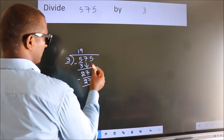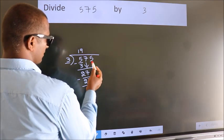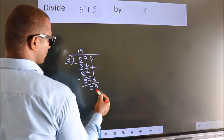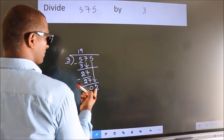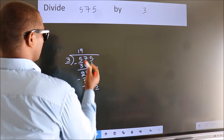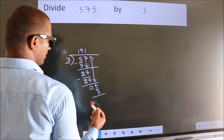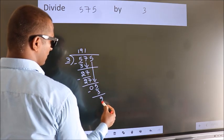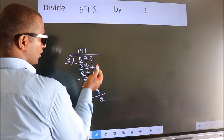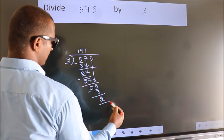After this, bring down the beside number. So, 5 down. So, 5. A number close to 5 in 3 table is 3 ones 3. Now, we subtract. We get 2. No more numbers to bring it down. So, we stop here.